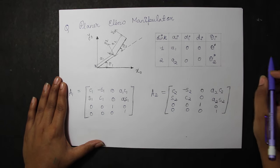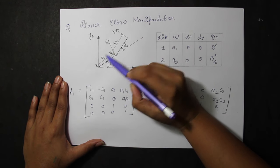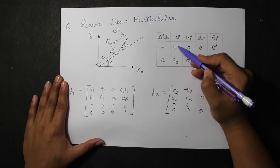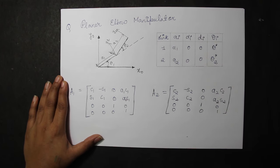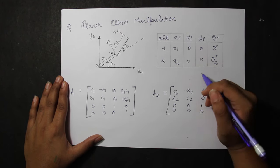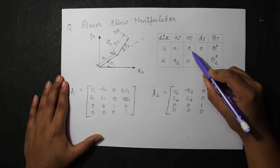We here know that the link length for the manipulator is A1 and A2. That is, for link 1, it is A1 and for link 2, it is A2. When we go to find out the link twist, here basically we do not have any link twist since it is basically defined at that position. So, we define it as 0 and 0.